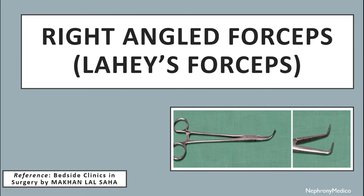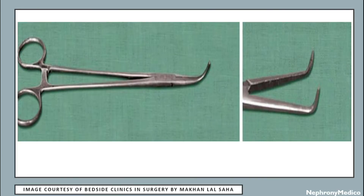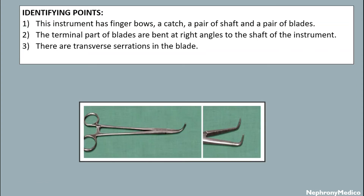Hello and welcome. Let's talk about right angle forceps, also known as large forceps. This is a picture showing right angled forceps. Identifying points: this instrument has finger bows, a catch, a pair of shafts, and a pair of blades. The terminal part of the blades are bent at right angles to the shaft of the instrument.